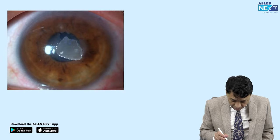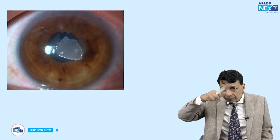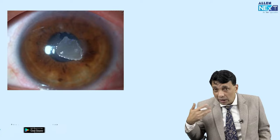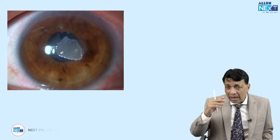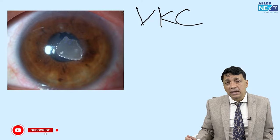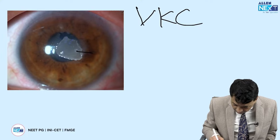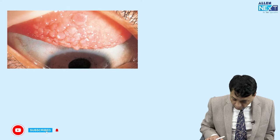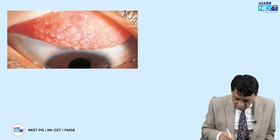Look at this beautiful triangular area on the cornea — a clear-cut triangle-shaped ulcer. Think of young boys in hot summer weather constantly itching their eyes, with severe photophobia, blepharospasm, and morning misery. This is vernal keratoconjunctivitis, also called vernal catarrh or spring catarrh. This finding is the famous shield ulcer — seen in spring catarrh or VKC.